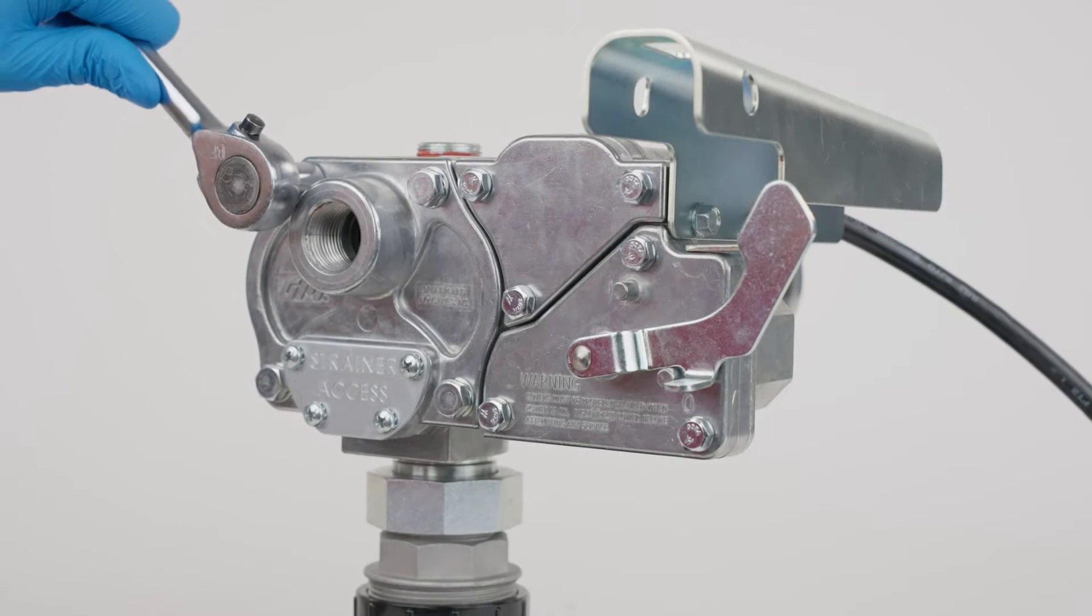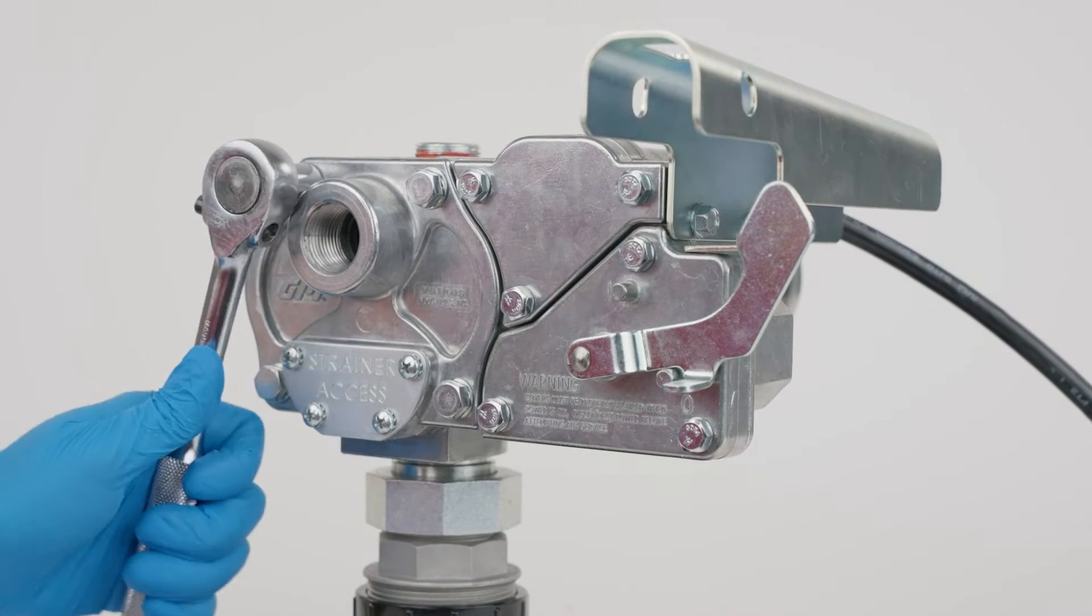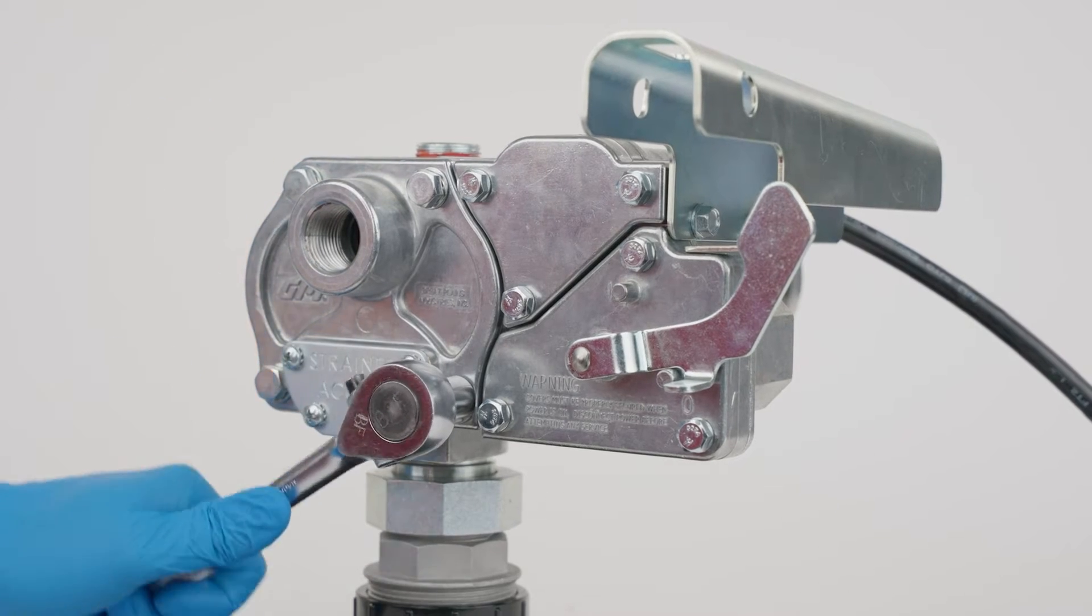Using a socket wrench, remove the gear cover plate, gears and drive key from the pump cavity.